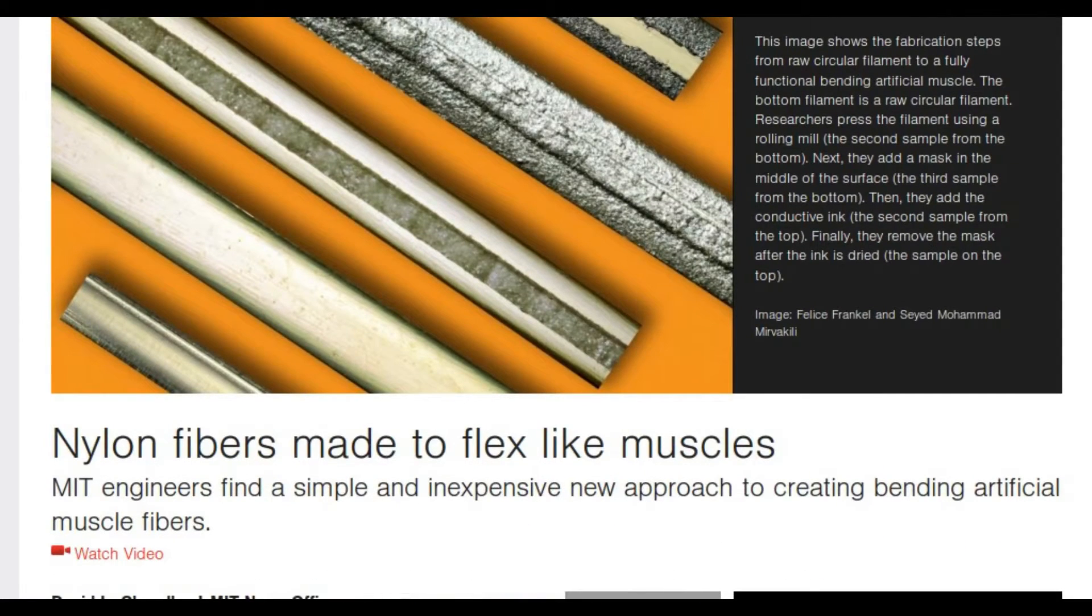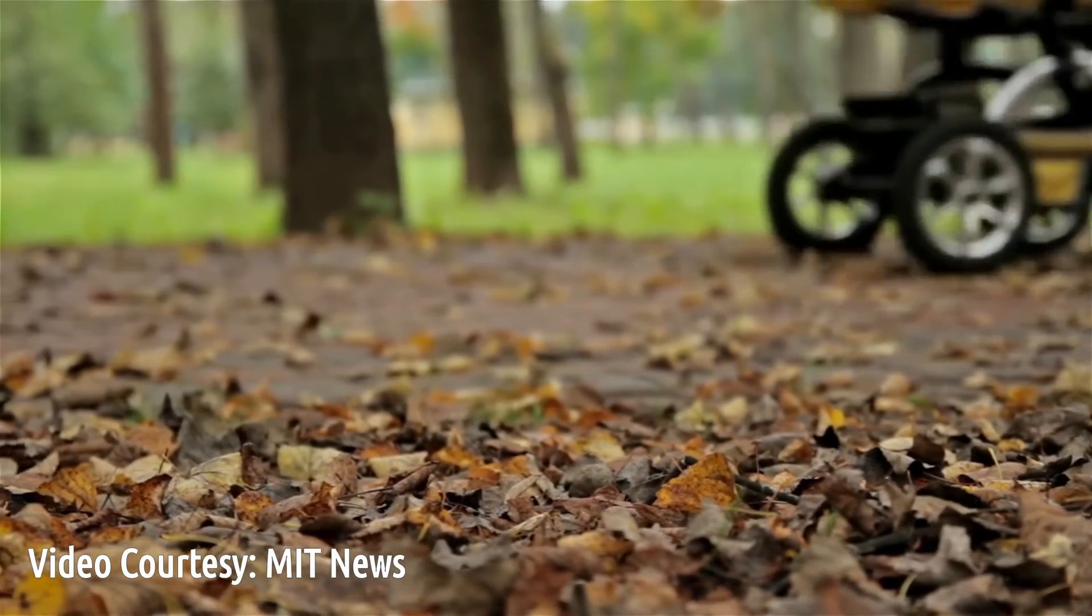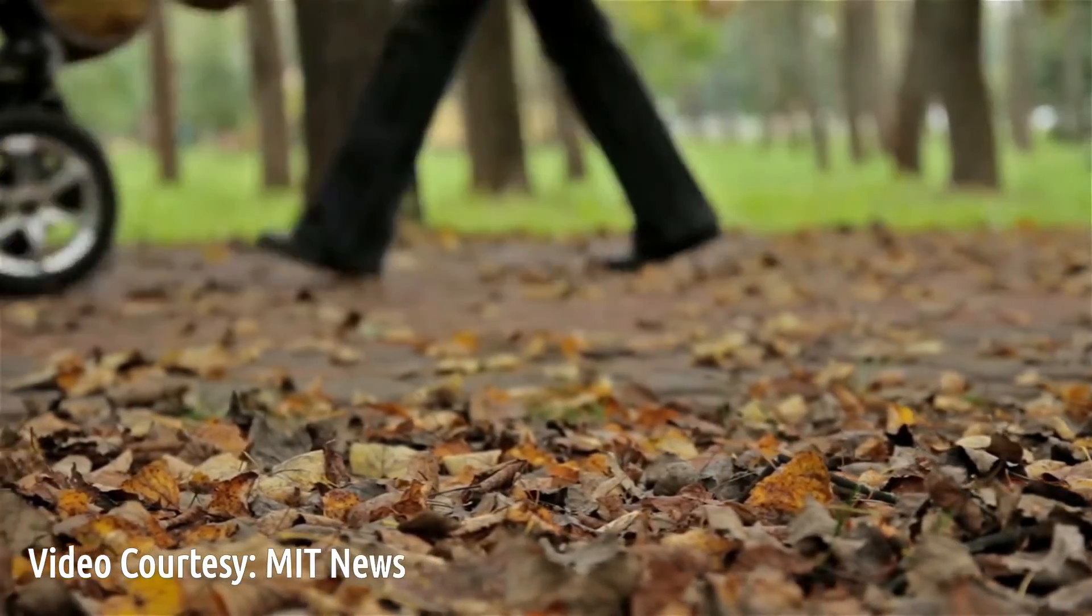MIT engineers have discovered a simple and inexpensive method for fabricating artificial muscle fibers using ordinary nylon fiber. Pulling inspiration from nature is not a new concept for engineers.